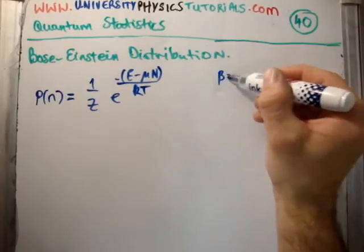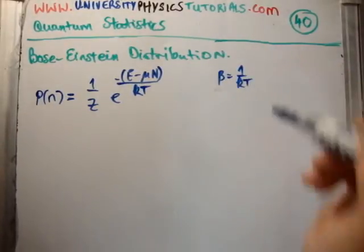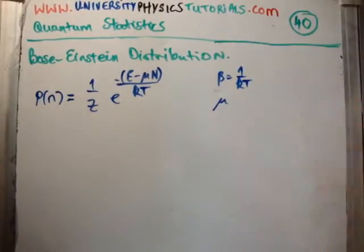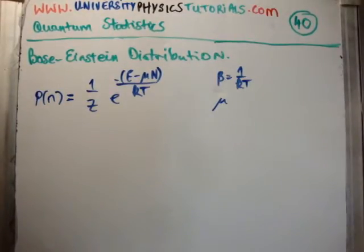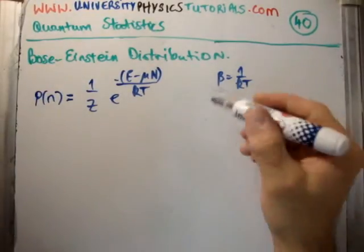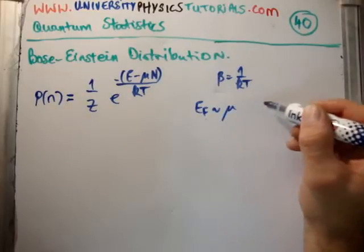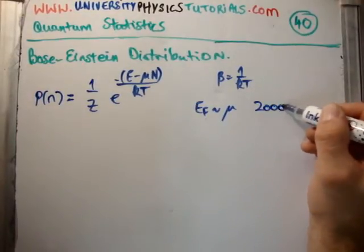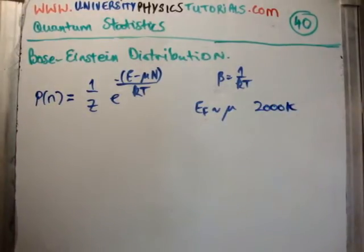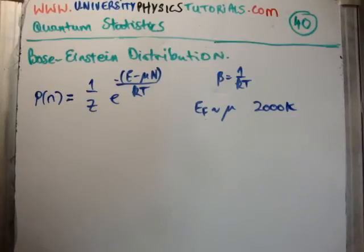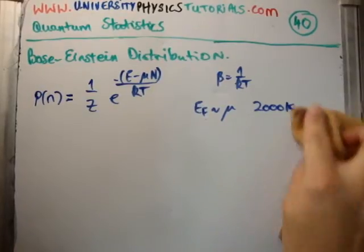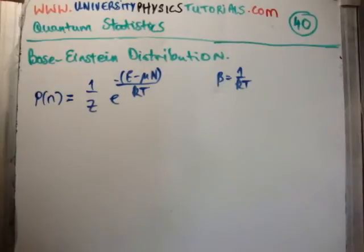Beta is equal to 1 over kT — we call that the thermodynamic beta. Mu is equal to the chemical potential, which is the energy added to a system when you add a single particle. Just as an aside, the Fermi energy is actually pretty much the same as the chemical potential until about 2000 Kelvin, which is why you'll see people writing the Fermi level instead of the chemical potential when talking about fermions. But we're talking about bosons, where there is no such equivalent, as we'll see.